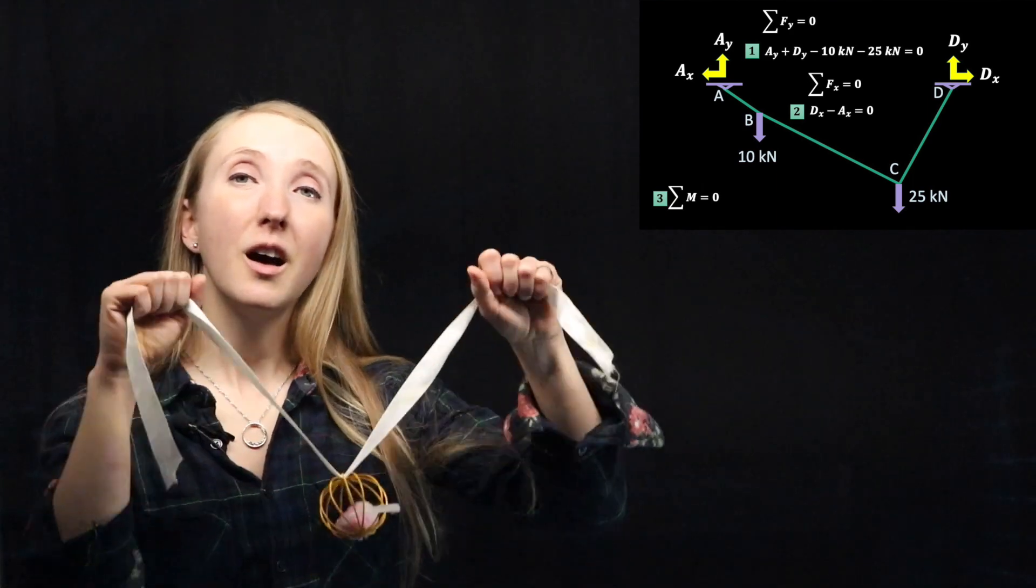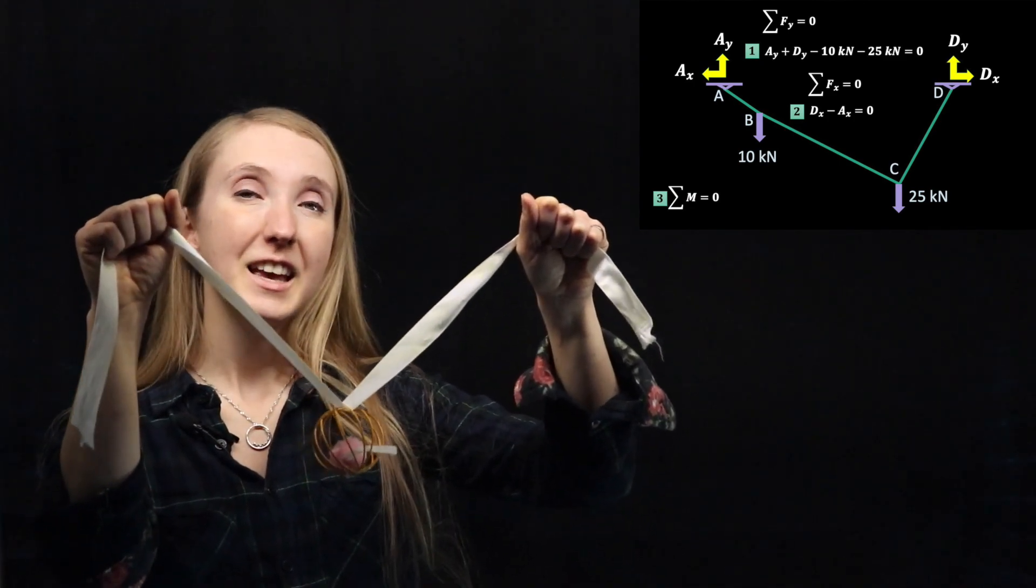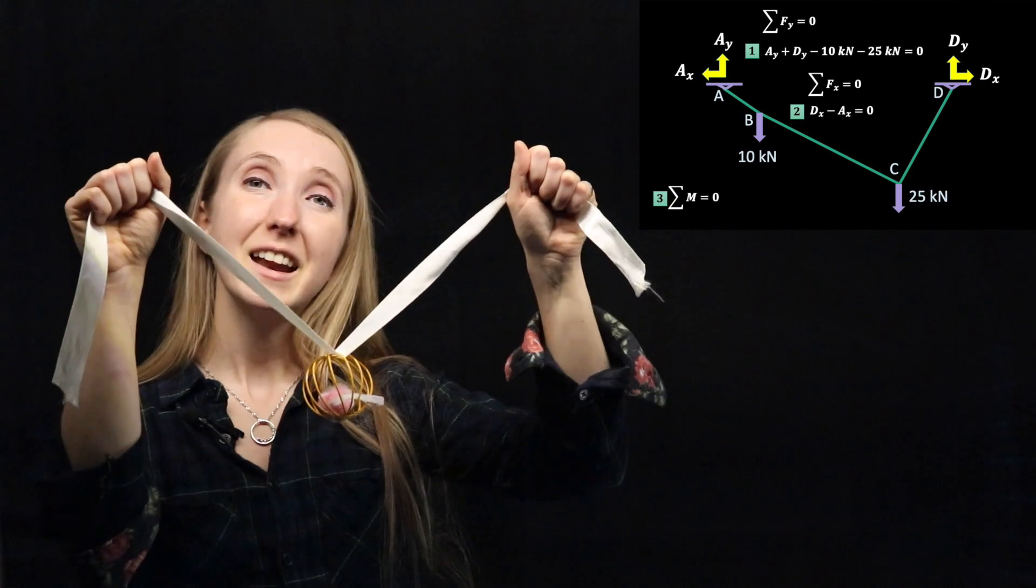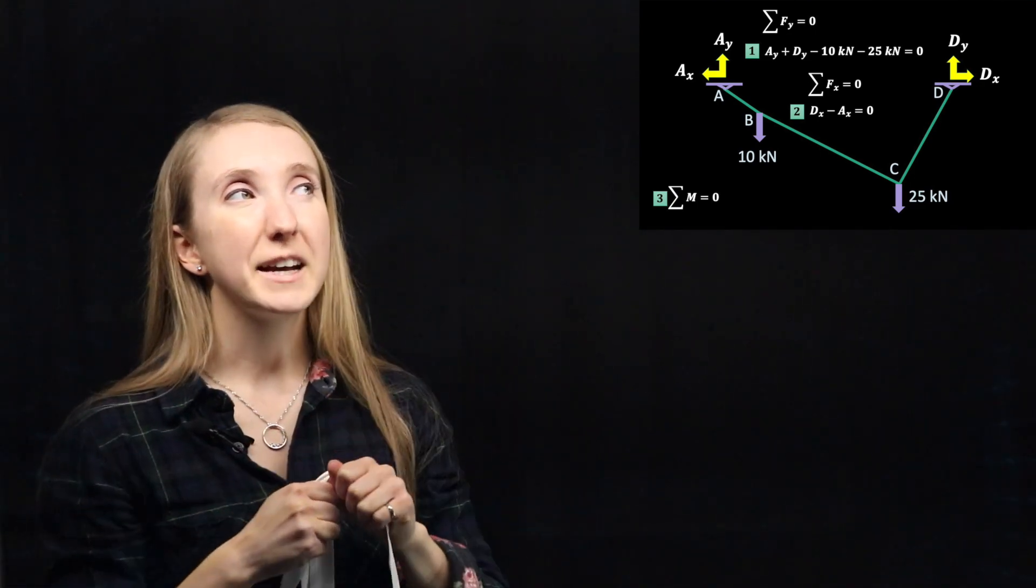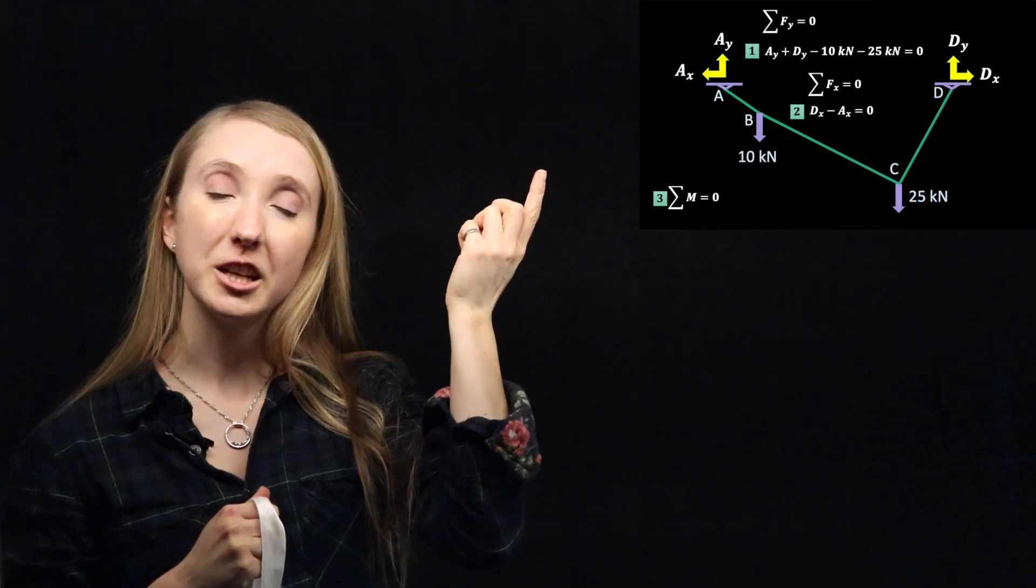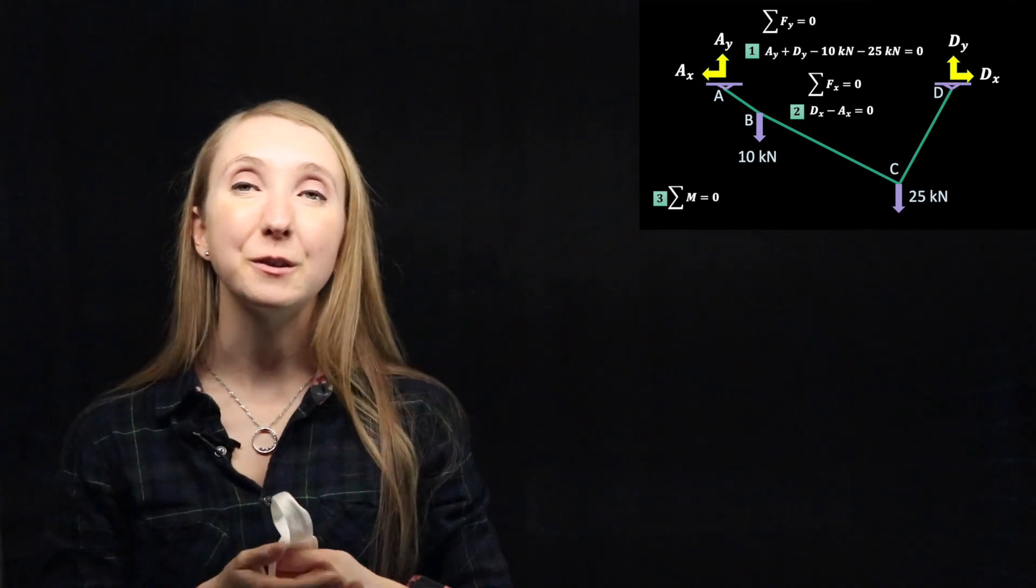So when you have a cable under a load, you have two reactions at each end. They have to hold it up and they have to keep it from pulling in on itself. So our reactions go in the up direction and in opposite direction on either end for the x.